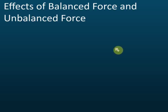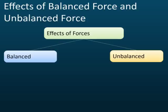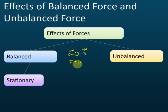The effects of balanced force and unbalanced force — this is very important, make sure you understand and remember this. Balanced force means the net force is equal to zero. For example, if there's an object and you give a force of 10 newtons to the right and 10 newtons to the left, the net force equals zero. This is called a balanced force — the force to the left equals the force to the right.